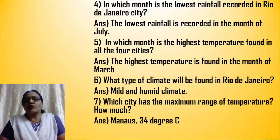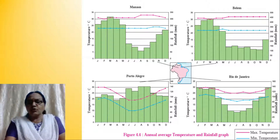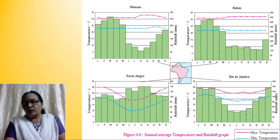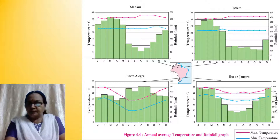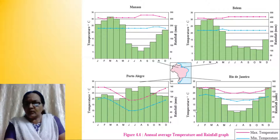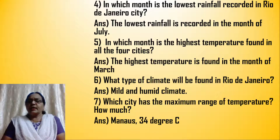In which month is the lowest rainfall recorded in Rio de Janeiro city? The histogram shows the rainfall received in millimeters. In Rio de Janeiro, July gets the lowest amount of rainfall — it will be more or less about 40 millimeters. So the lowest rainfall is recorded in the month of July.